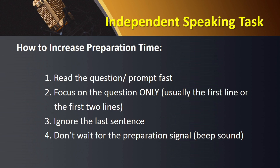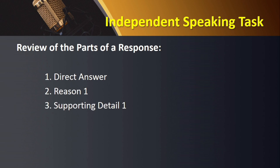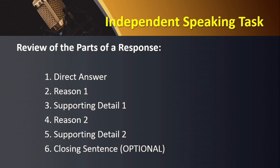Before we end this video, let us review the parts of an independent task response. Starting with the direct answer statement or thesis statement. Next is your first reason, followed by a detail — either an explanation or an example that would further expound or illustrate the reason. Then comes your second reason, which again must be supported by an explanation or an example. Finally, the optional closing statement, if you still have at least 10 seconds on your response time. Remember also to vary your sentences, and the key to earning a perfect score in terms of delivery is to practice.